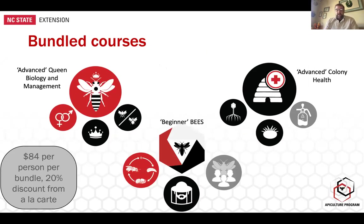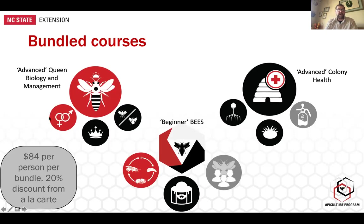We've also bundled popular courses into single Moodle courses that contain the content of three courses. For example, we've bundled the beginner level three courses — biology, management, and industry — so people can enroll in one course rather than three. We've done the same for advanced courses dealing with queens: queen biology and mating, queen rearing, and honeybee genetic stocks, since queen rearing is something many advanced beekeepers are drawn to.